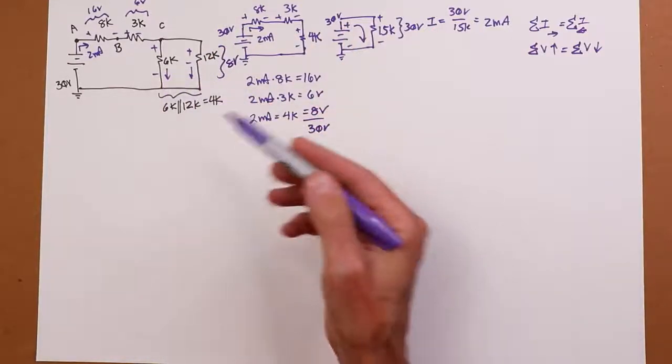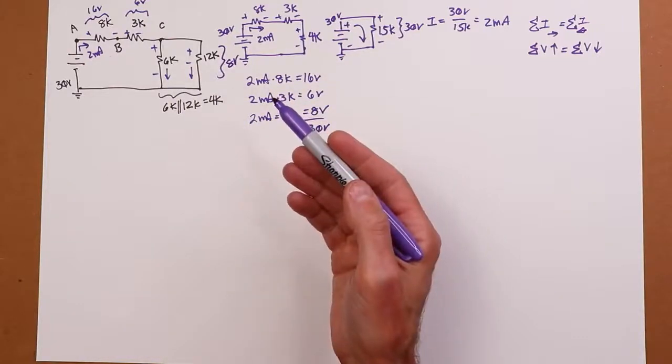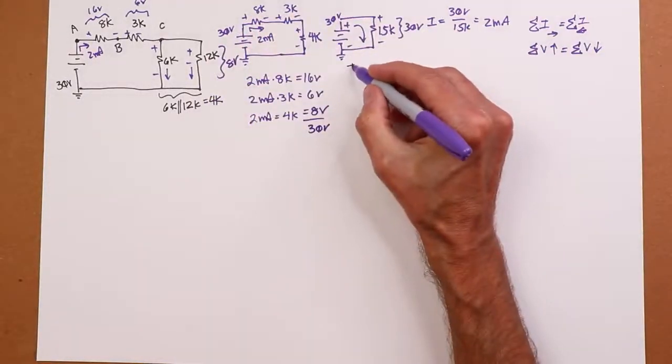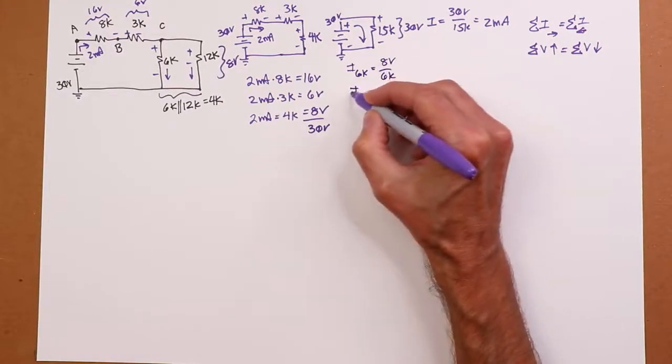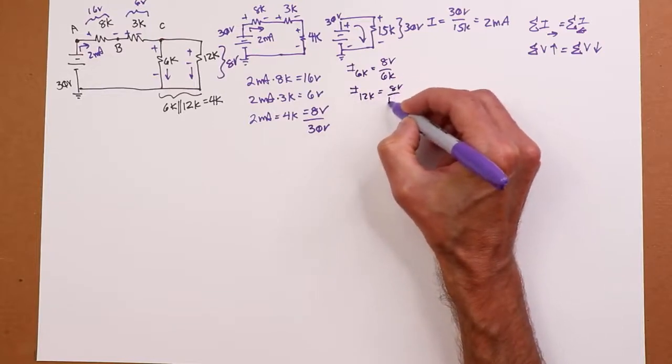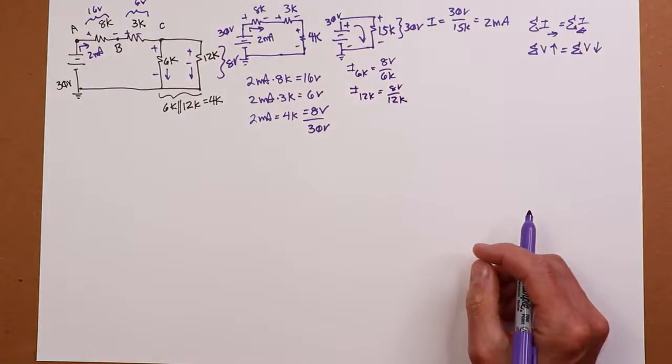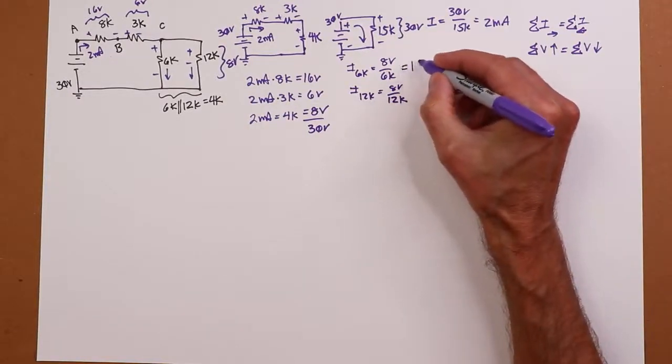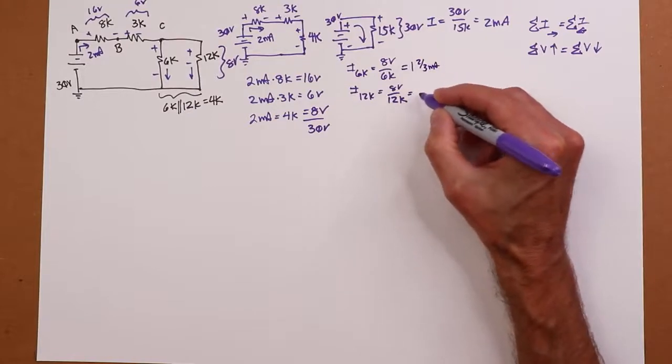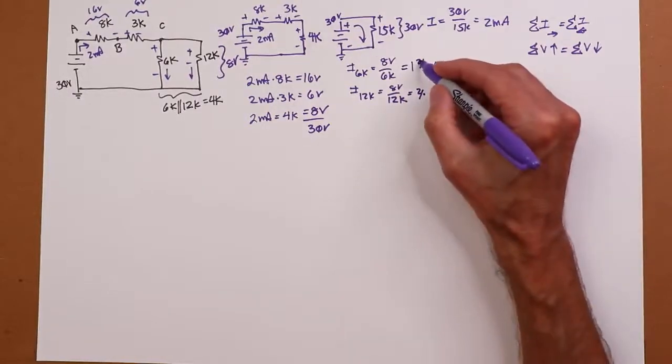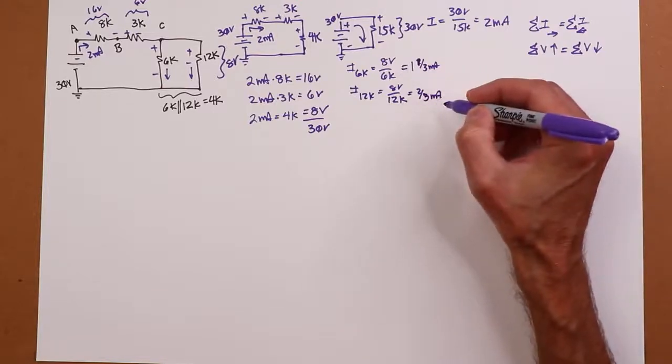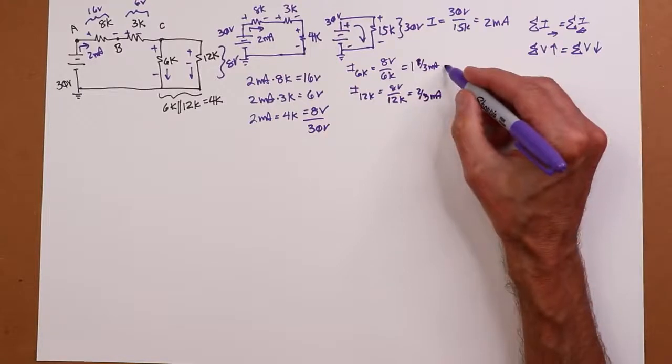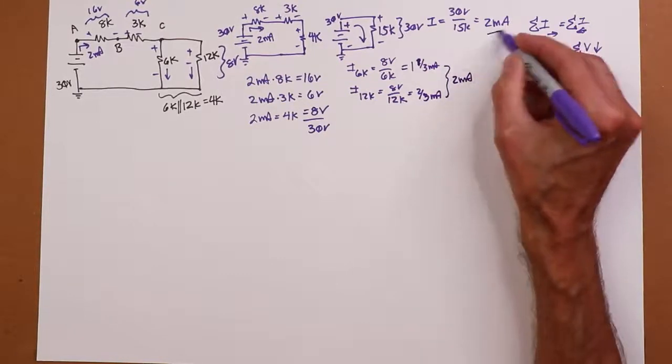And I have options, right? I can just come in and say, let me just do an Ohm's law. So the current through the 6K, as an example, would be 8 volts divided by 6K. And the current through the 12K would be 8 volts divided by 12K. All right. So you're going to get two thirds and one and a third mills. And that should add up to the entering current, right? One and a third and two thirds is one and three thirds, which is two. That's what we started with.